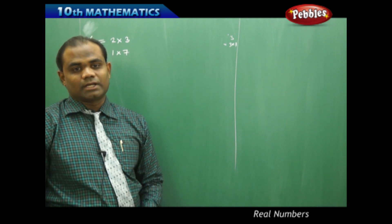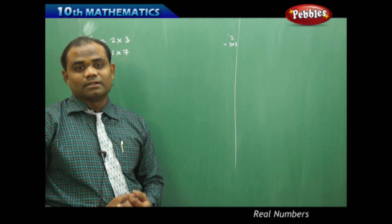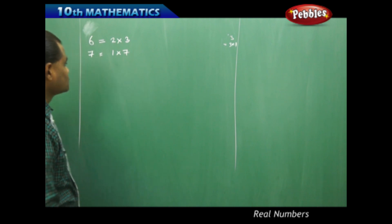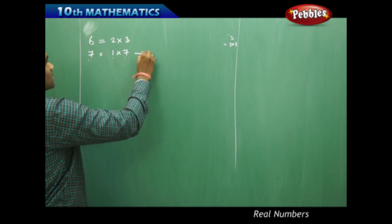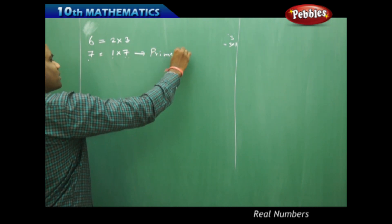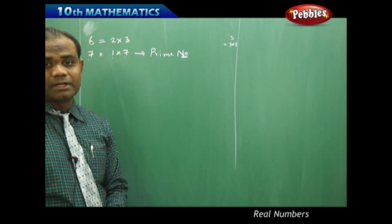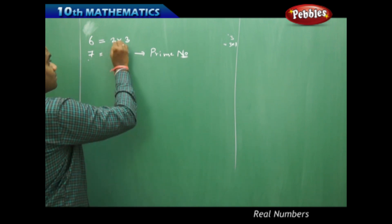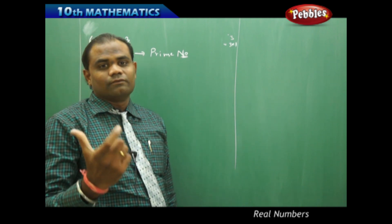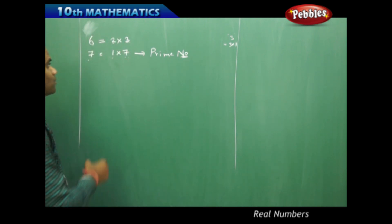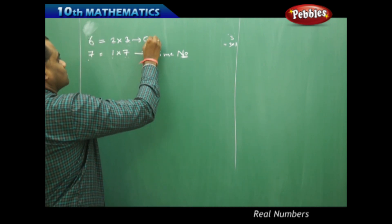The numbers which cannot be expressed as the product of two or more different numbers except 1 and itself are said to be prime numbers. In the case of 7, which can only be expressed as a product of 1 and itself, it is strictly by definition a prime number. Whereas 6, which can be expressed as a product of two different numbers that are not 1 and itself, is a composite number.